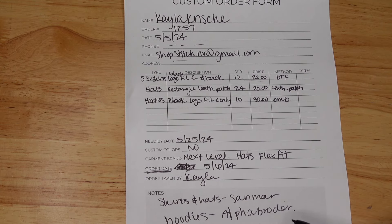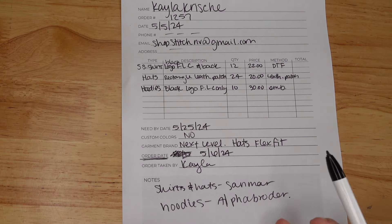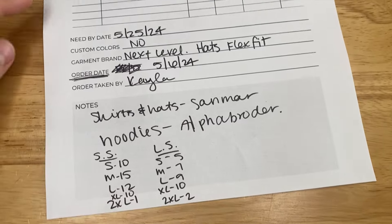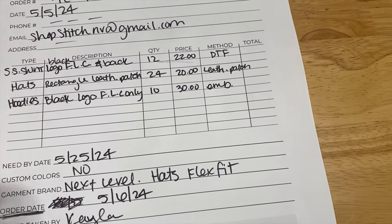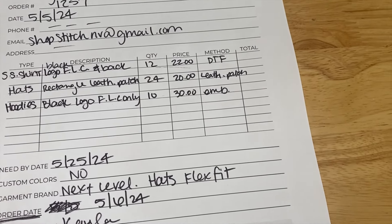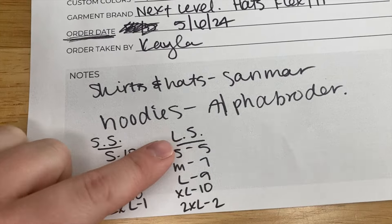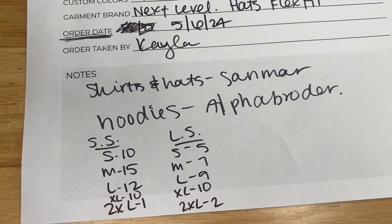This notes space is also where you can put quantities for each size — I didn't leave a separate spot for that above since the lines are small. So for example: SS small 10, medium 15, and so on. Really use that notes space to your advantage. Thanks so much for watching — I hope you learned how to take a custom order. If there's something I missed, leave a comment below so we can all learn from each other. Make sure you subscribe and I'll see you in the next video.